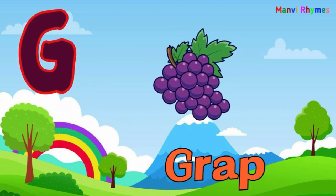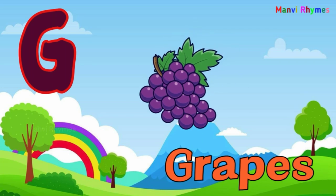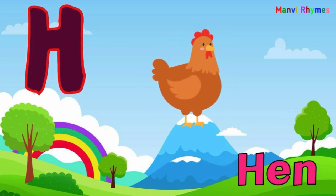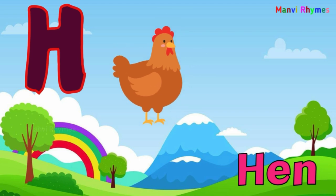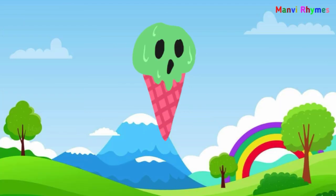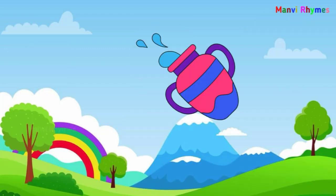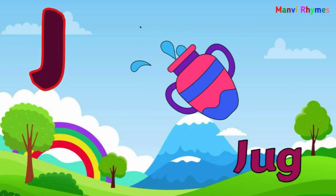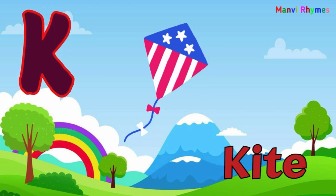G for grapes, H for hen, I for ice cream, J for jug, K for kite.